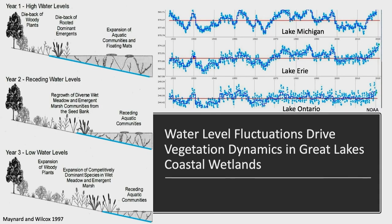This is from Maynard and Wilcox 1997, which showed that during high water levels — as we experienced in 2017–2019 on Lake Ontario — the water comes up, shrubs die back, emergents die back, and aquatic communities expand. As water levels come down, we see regrowth of emergent vegetation and wet meadow grasses and sedges. It is this process of water levels rising and falling that creates zonation. If water levels were stagnant, we'd just have a pond. It is this rise and fall that creates these dynamic wetlands.